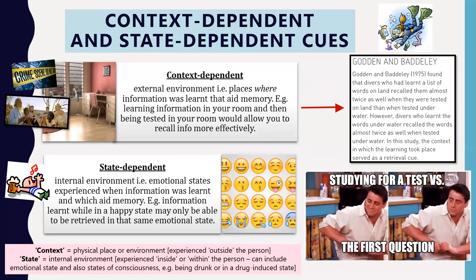This is basically looking at two types of retrieval cues. The word 'cues' kind of rhymes with 'clue' — any retrieval cue, whether context dependent or state dependent, is intended to act as a hint to help you remember information you've learned or an experience you've gone through. A retrieval cue is any hint or clue that helps you remember information.